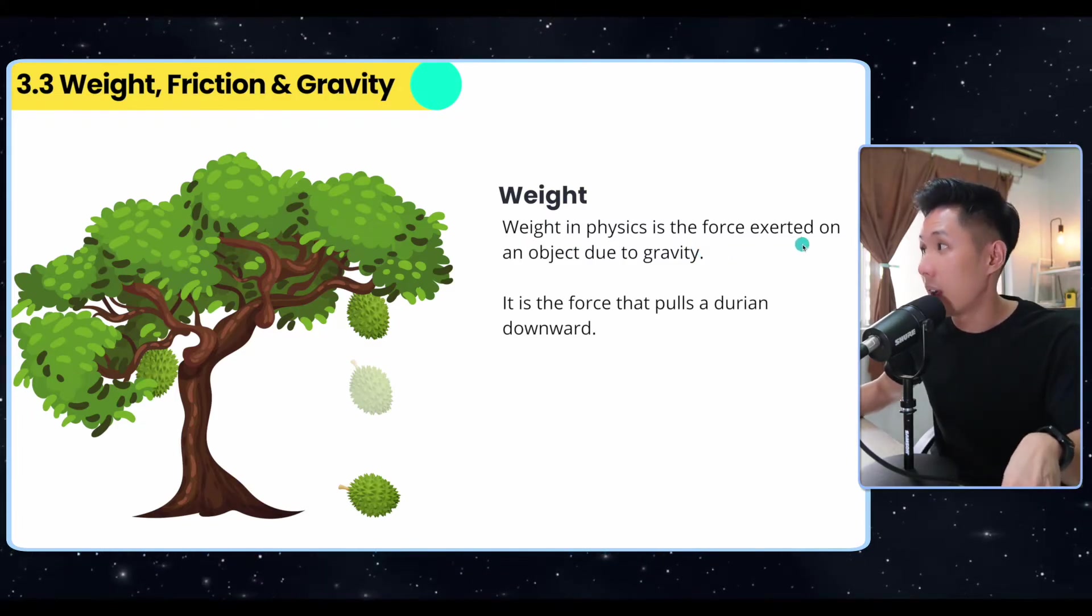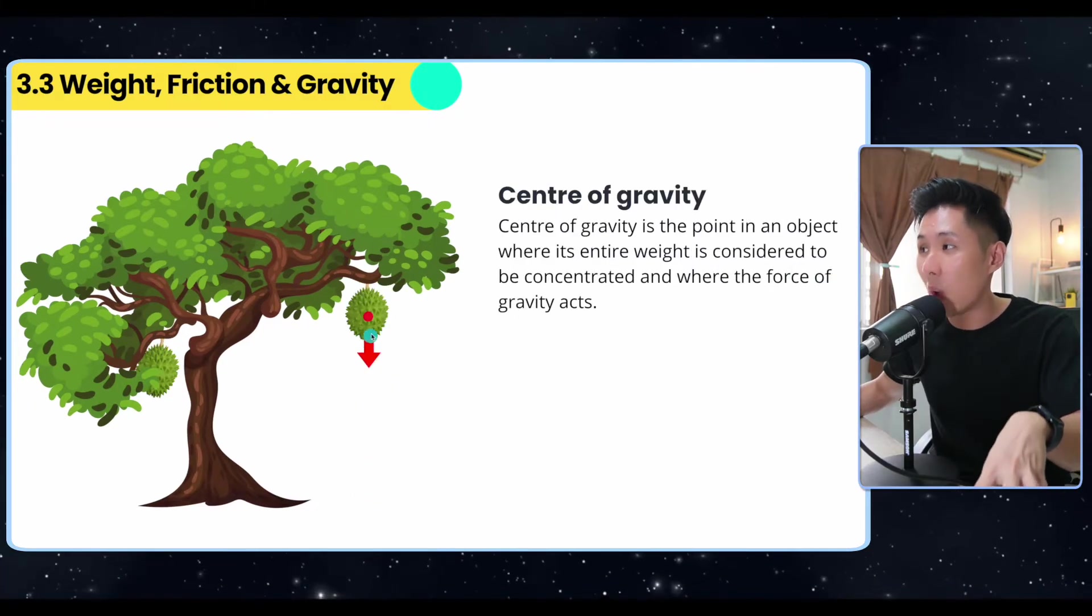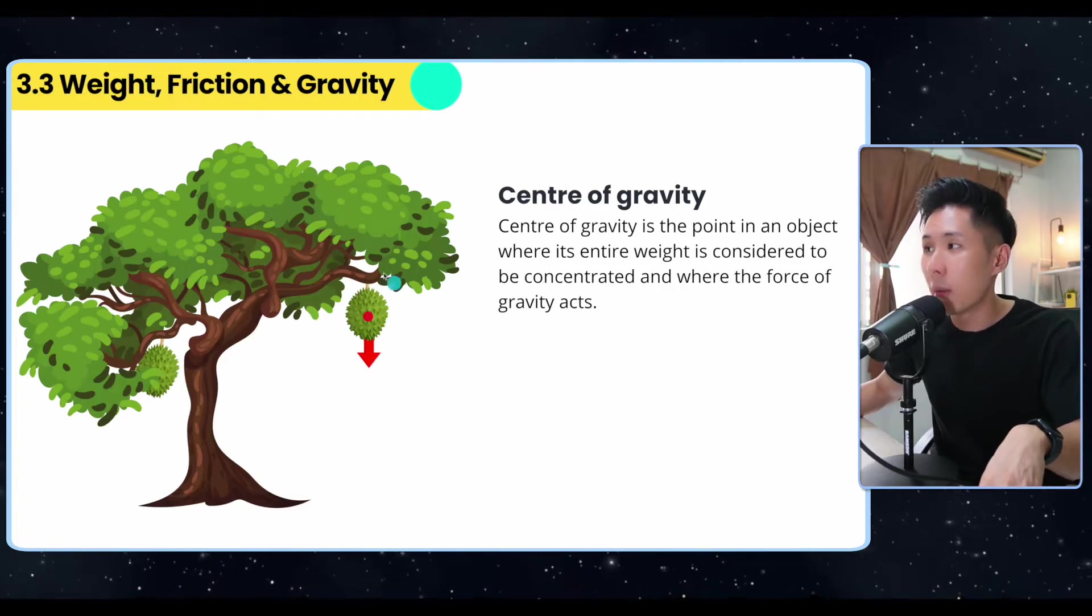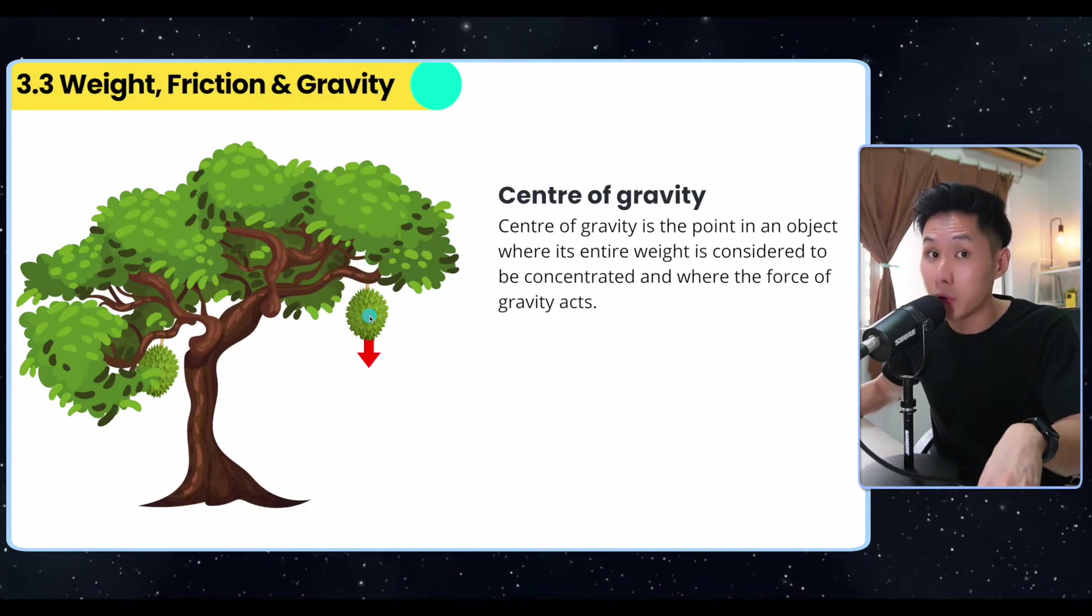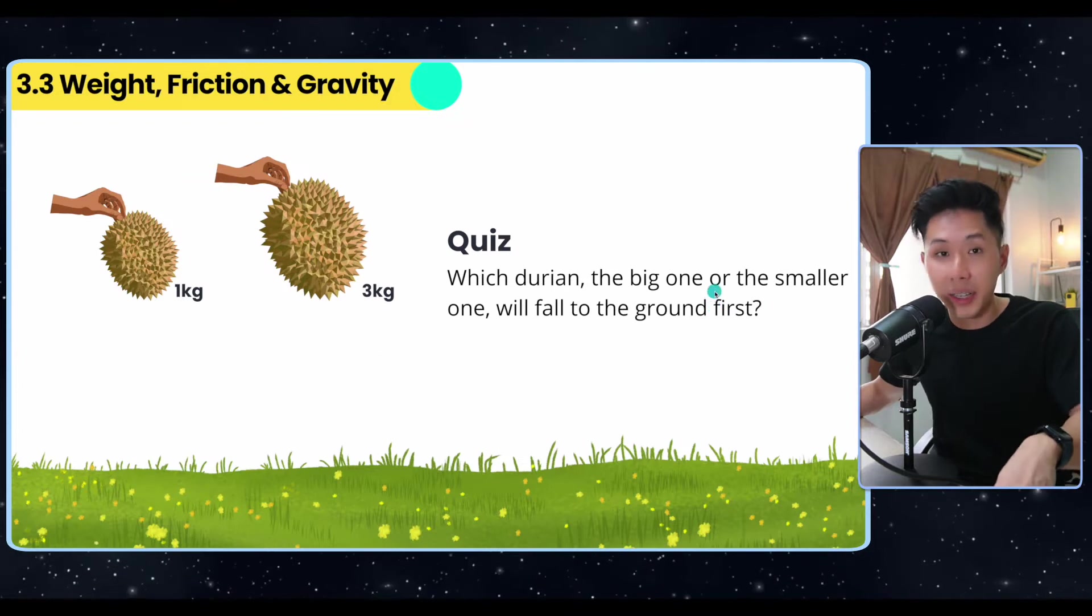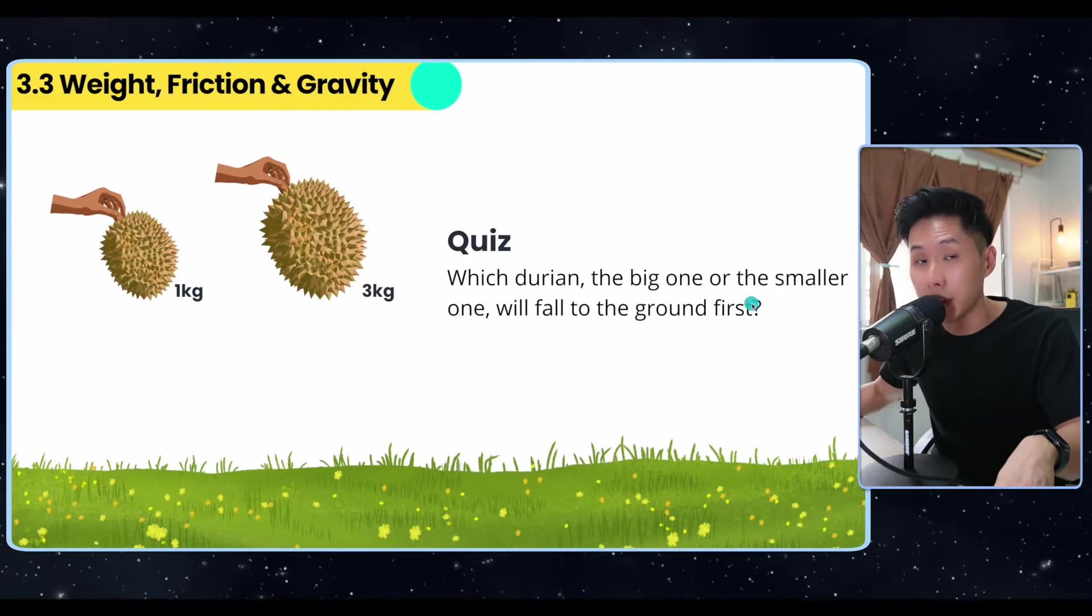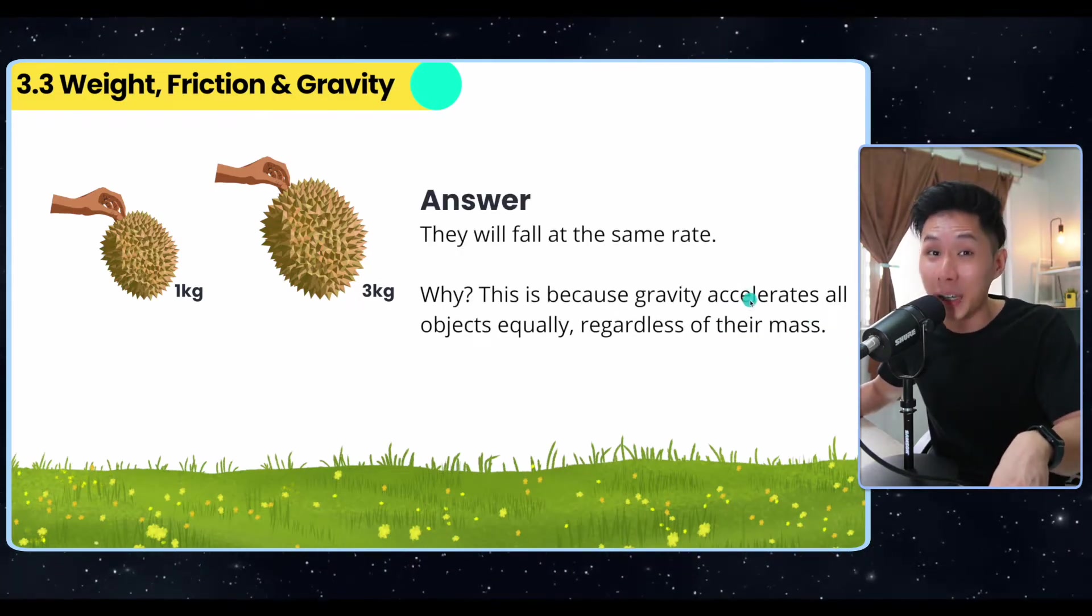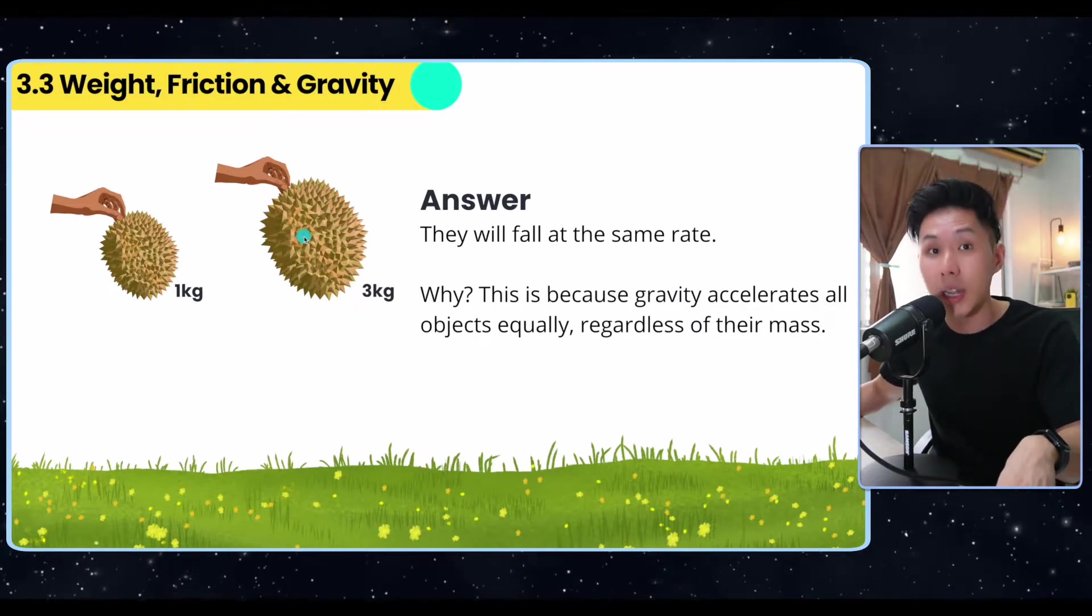Weight in physics is the force exerted on an object due to gravity. I have Durant here to illustrate that. Weight will act on the center of mass of an object. We'll learn more about center of mass in the next chapter, but you can assume it's the center of every object. Now a quick quiz about weight: which Durant, the big one or the smaller one, will fall to the ground first? The answer is they will fall at the same rate.